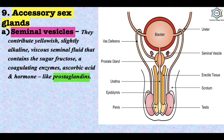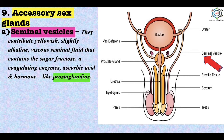Now the accessory glands. The first is the seminal vesicles, which contribute a yellowish slightly alkaline viscous fluid containing the sugar fructose, coagulating enzymes, ascorbic acid and hormones like prostaglandins. They are located near the ampulla of the vas deferens. Fructose provides energy to the sperms for motility, and prostaglandins stimulate contractions in the female reproductive tract to help the meeting of sperm and ovum in the oviduct.